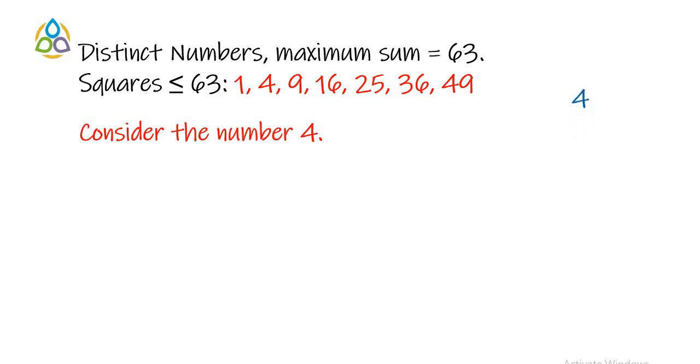So, first we will consider 4. In order to make the sum of any two consecutive numbers a perfect square, what are the possibilities for 4 to the left side and to the right side? To the right side and to the left side, we can place 32.